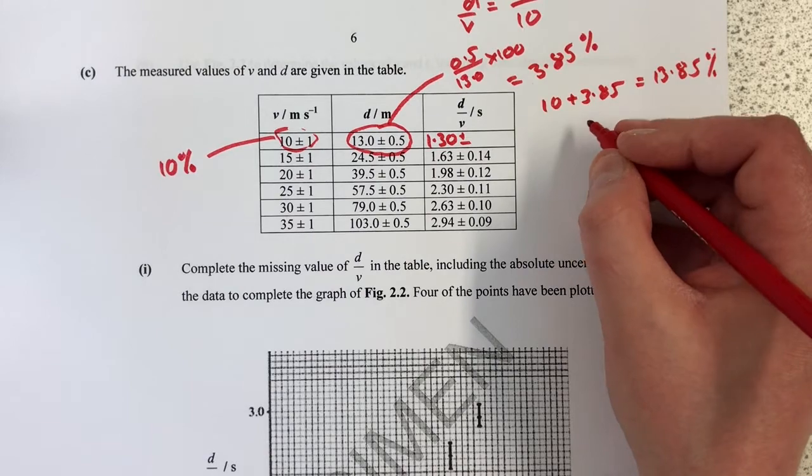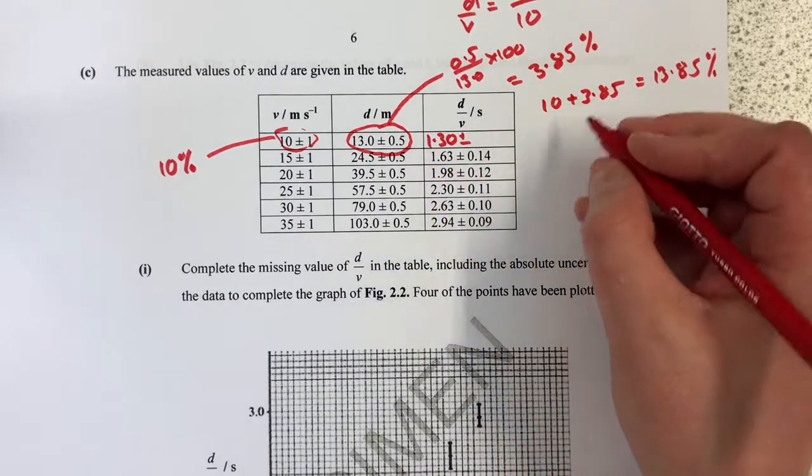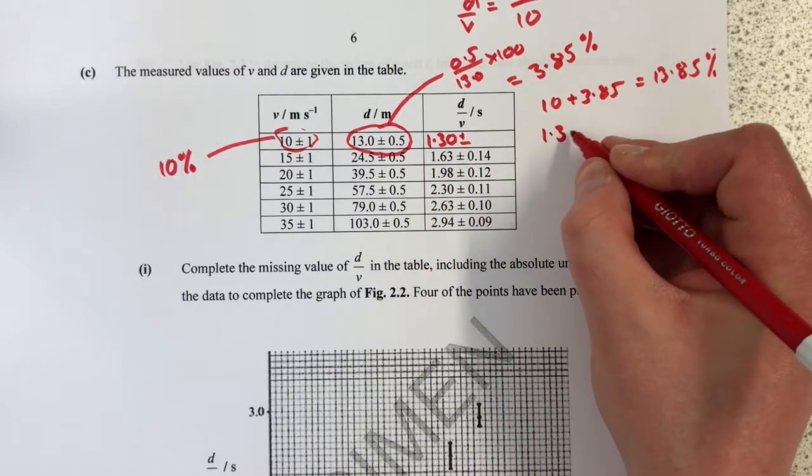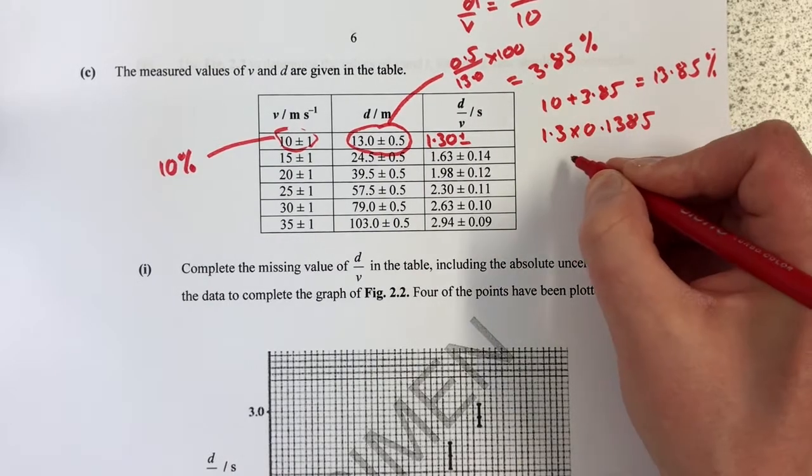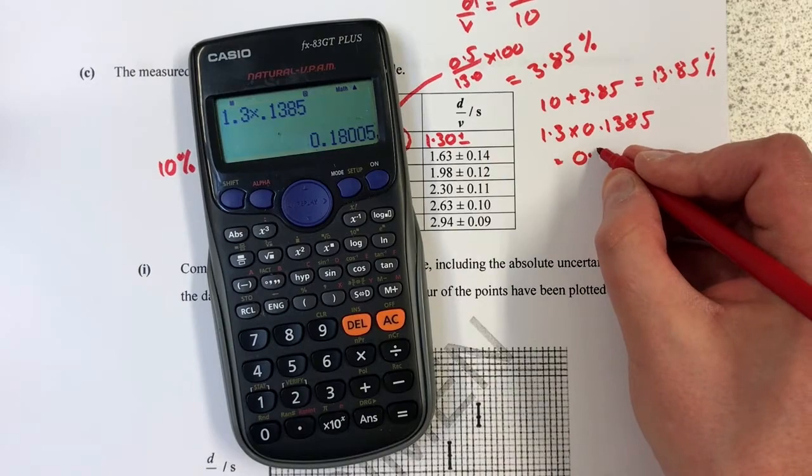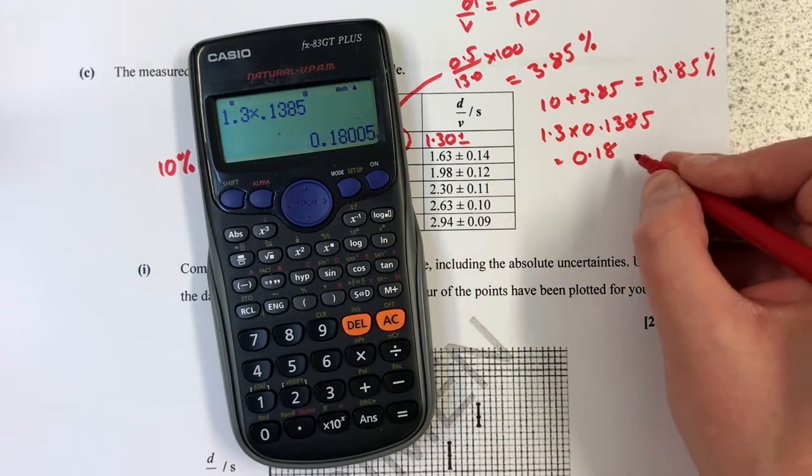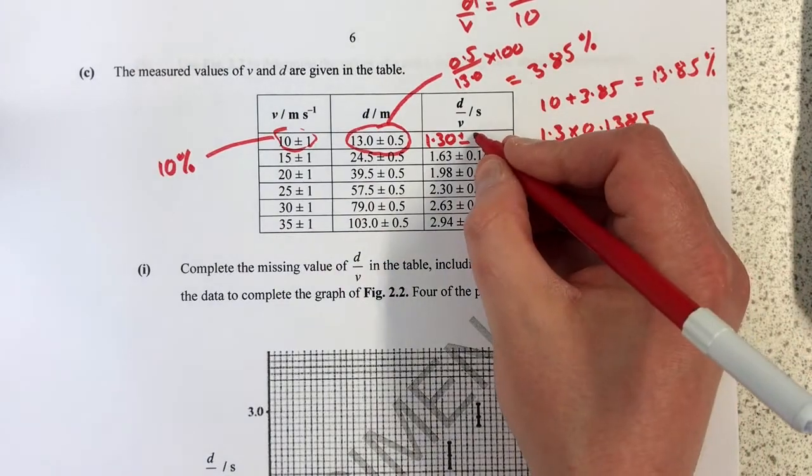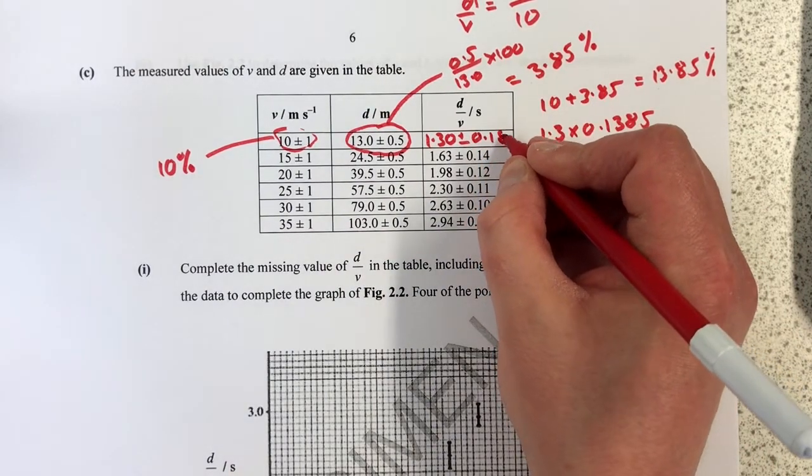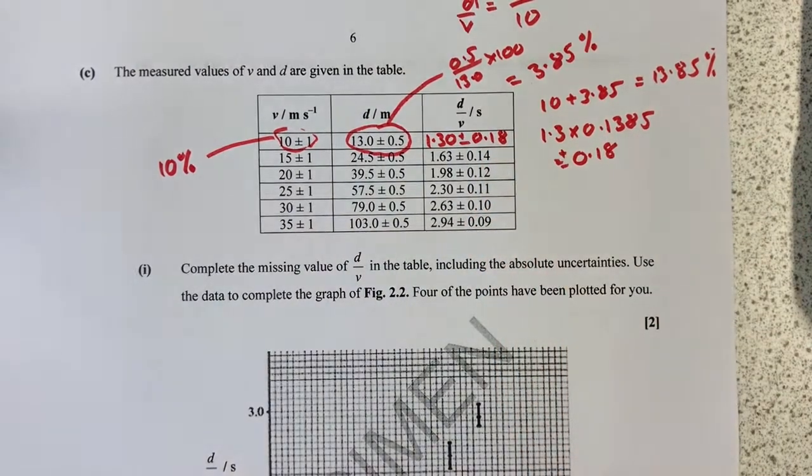So I need to now convert that into an absolute uncertainty. So I need to know what 13.85% of 1.3 is. So 1.3 times by 0.1385 will give me 0.18 and some change. 0.18 is going to be my uncertainty, then I'm going to write down 0.18 is my plus or minus uncertainty there.